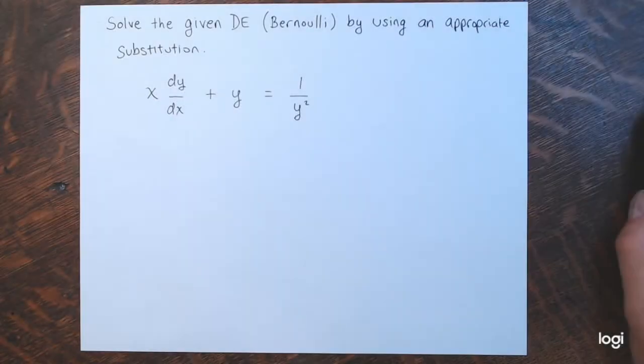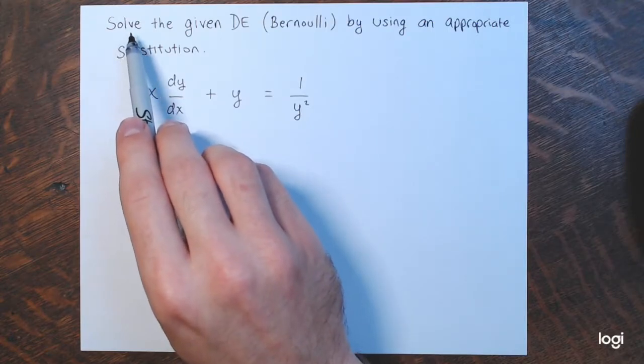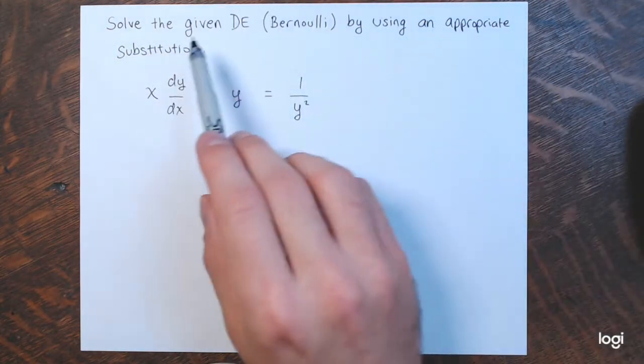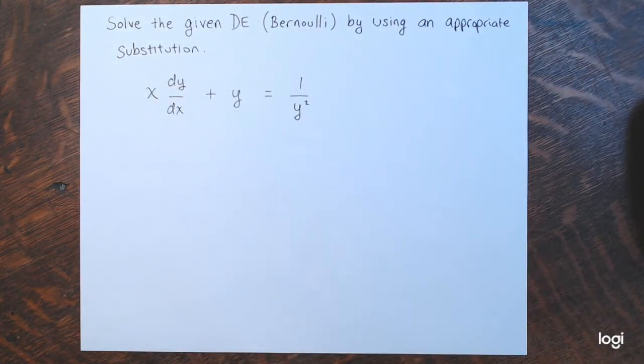This is a special kind of equation in which we're going to make a substitution, and after that substitution is made, the equation transforms into a linear equation that we can then solve and substitute back. In both examples, the instructions say: solve the given differential equation by using an appropriate substitution — specifically a Bernoulli substitution.